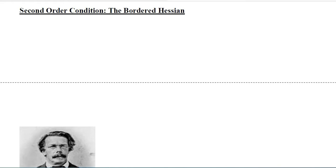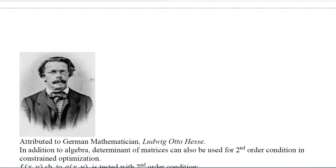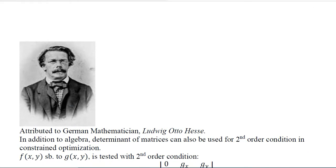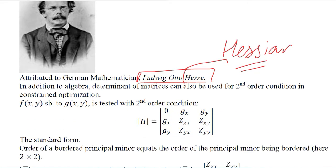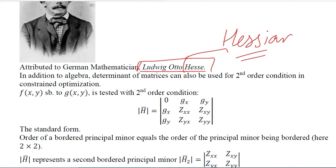When it comes to constrained optimization, the Hessian determinant changes a little bit and becomes the bordered Hessian determinant. This is actually the matrix version of the second order condition, named after a German mathematician. In this case we have a bordered Hessian determinant because there is a border of the constraint in the elements of it. So this is the alternative of the algebraic version of the second order condition.